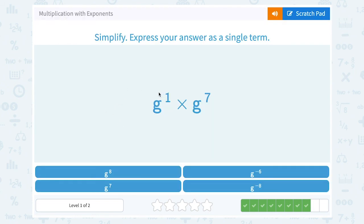g to the 1st times g to the 7th. Our rule is add those exponents. 1 plus 7 would give us an exponent of 8. So g to the 8th power.